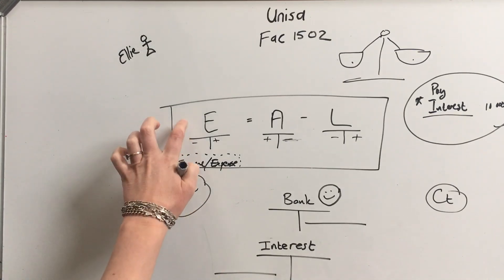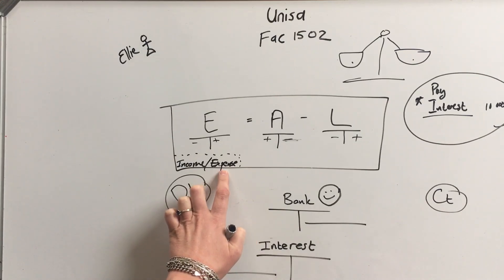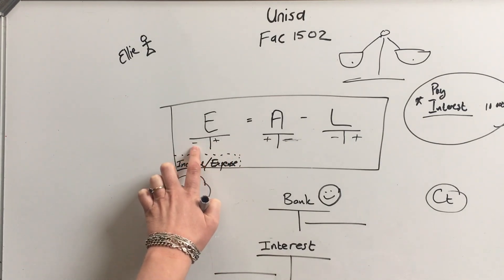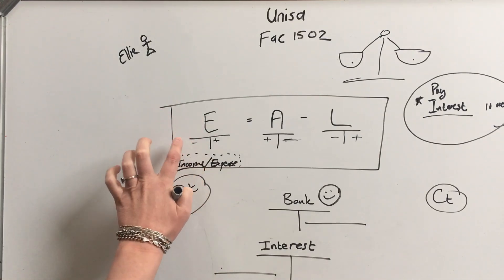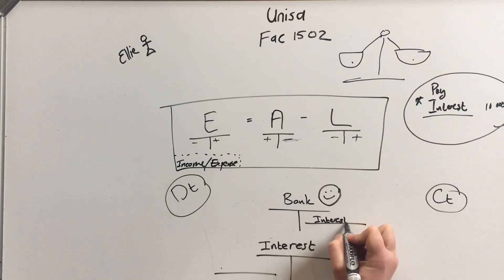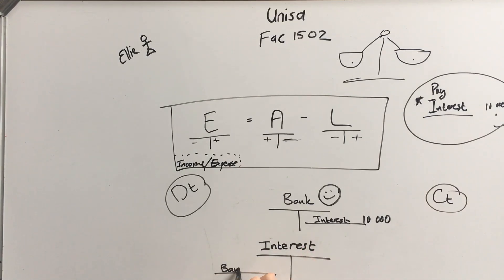Looking at our quick notes for income and expense: an expense has a minus, meaning it makes equity less. So on bank's credit side we write 'interest — 10,000,' and on the interest account's debit side we write 'bank — 10,000.' That's our easy accounting — that's it.